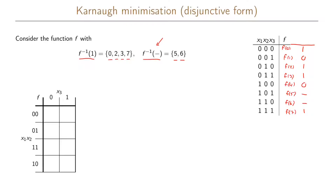Now we take this truth table and write the outputs in our Karnaugh map. So f(0) = 1, f(1) = 0, f(2) = 1, f(3) = 1, f(4) = 0 — written in the last row of our Karnaugh map — f(5) = don't care, f(6) = don't care, and f(7) = 1. Now what we want to do is find as large rectangular blocks as possible in our Karnaugh map, which includes either 1, 2, 4, or in this case 8 ones.